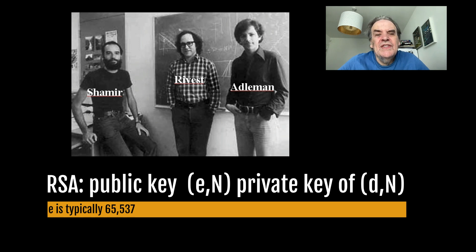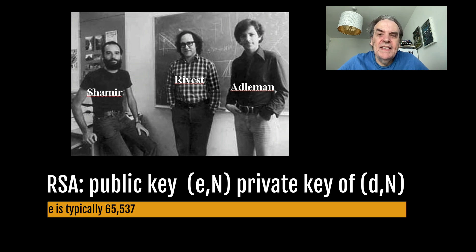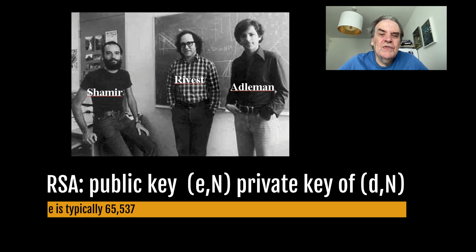In RSA we have a public key of E and N, where N is the public modulus, and a private key of D and N. E is the public exponent and D is the private exponent. The public exponent is normally set to 65,537 these days.